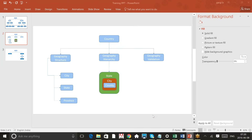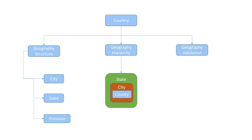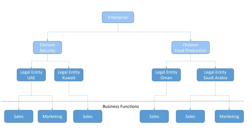Going back to the PowerPoint: this is the structure I created for understanding how legal entity, business unit, and business function fall together. At the top there is the Enterprise — there can only be one. When we get the instance, the enterprise is already there in the system, called 'Setup Enterprise'. We can change the name of the enterprise to our client's ultimate holding company name. Below the enterprise there is something called Division.